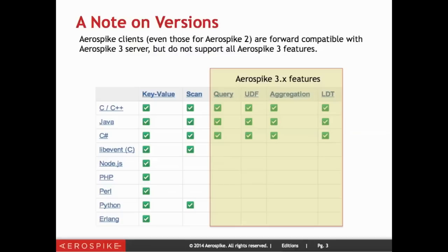You can see on this table a list of all the different features supported by each language. For instance, if you're using C, C++, Java, or C#, all of the different features of Aerospike 3 are supported. However, if you're looking at some of the other languages like LibEvent or Node.js, only the key value features are supported. You can continue to use those clients with Aerospike 3, but be aware you won't be able to use all the different features.